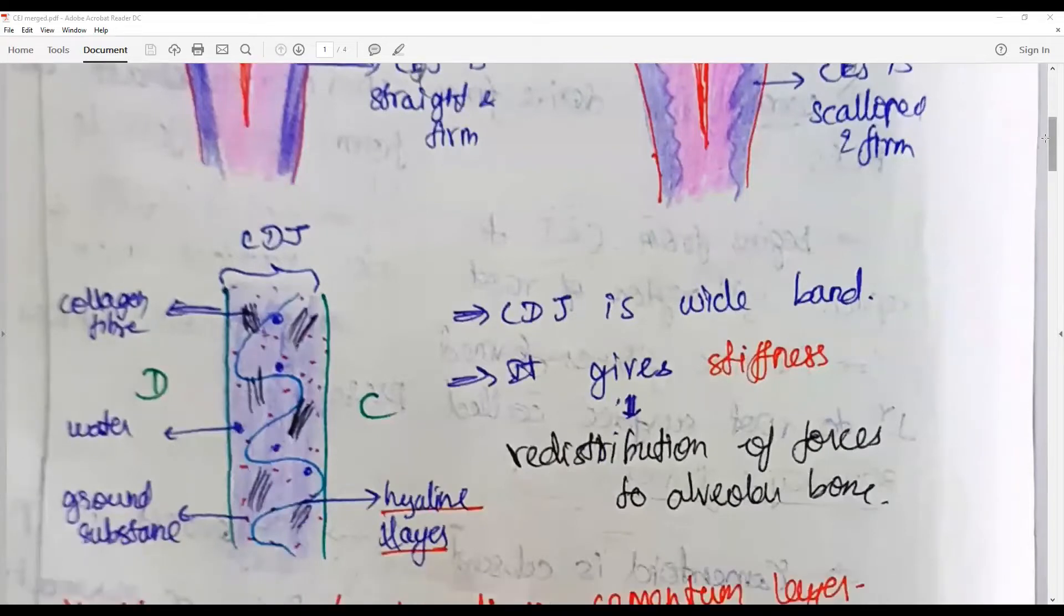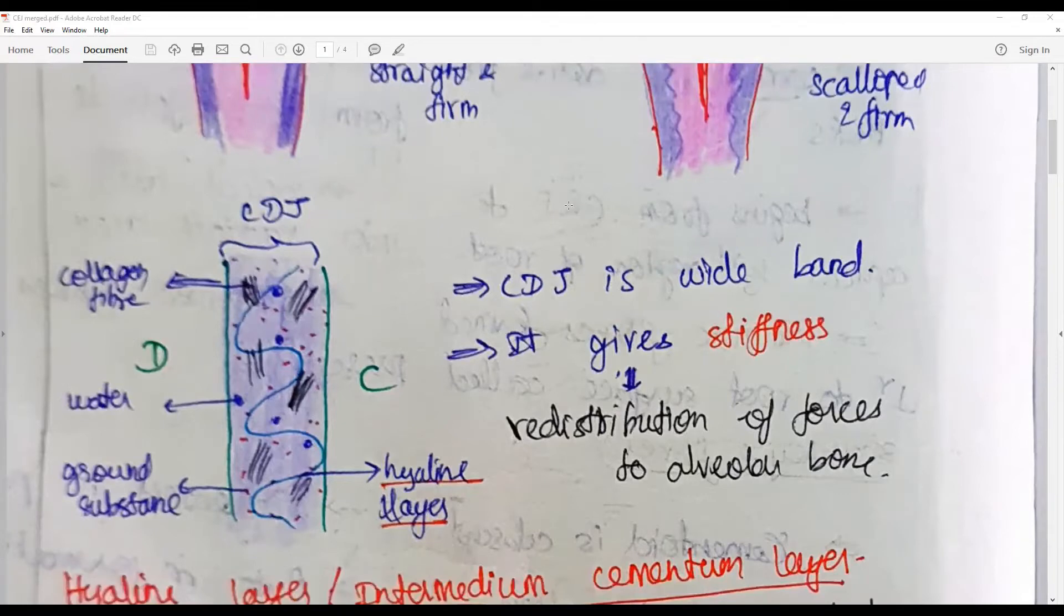Cemento-dentinal junction is a wide band that gives stiffness and helps in the redistribution of forces to the alveolar bone. It is made up of collagen fiber, water, and ground substance, all in a calcified matrix.